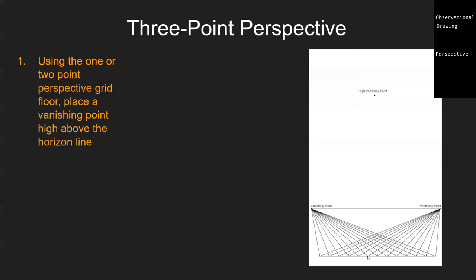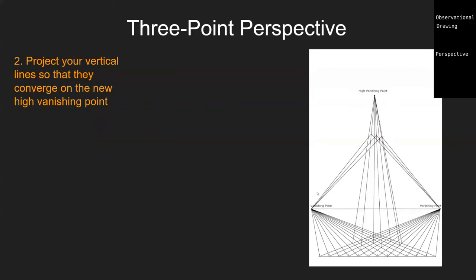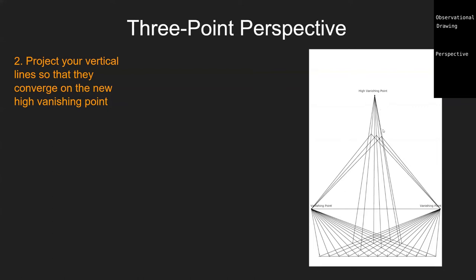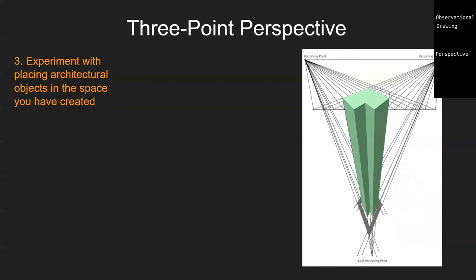For three-point perspective, we have the same setup as two-point at the base but we've added a third vanishing point either above or below the horizon line. This adds the final plane of recession — as things get further away vertically, we also account for them by scale. Any point from the ground grid is projected so all vertical lines converge at that third vanishing point rather than being truly vertical.